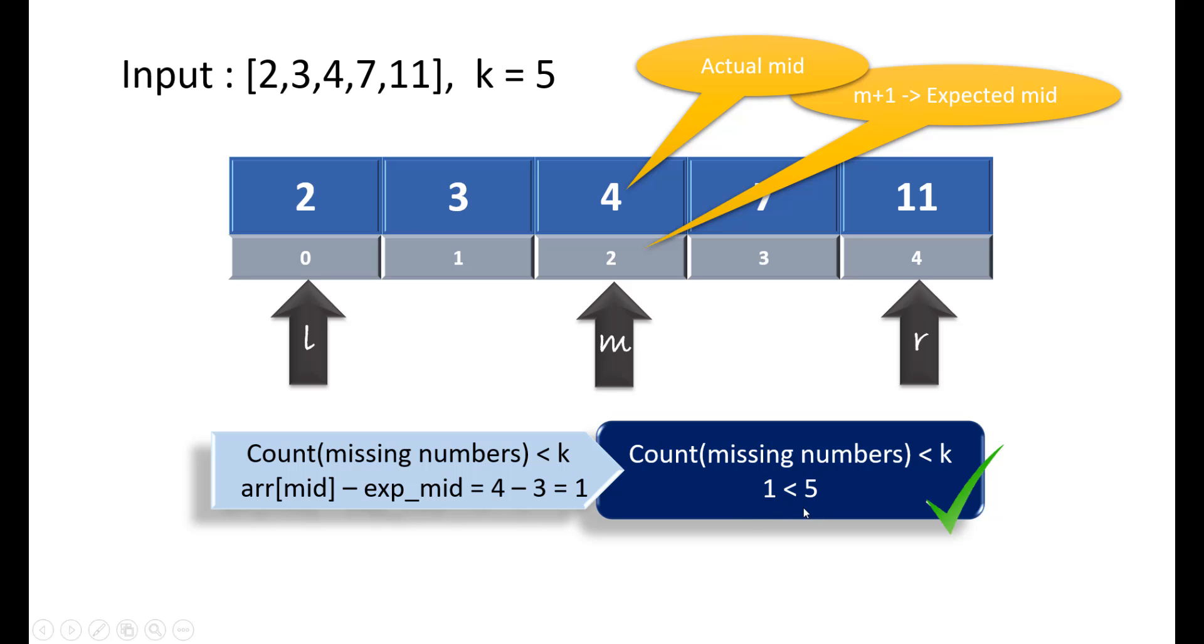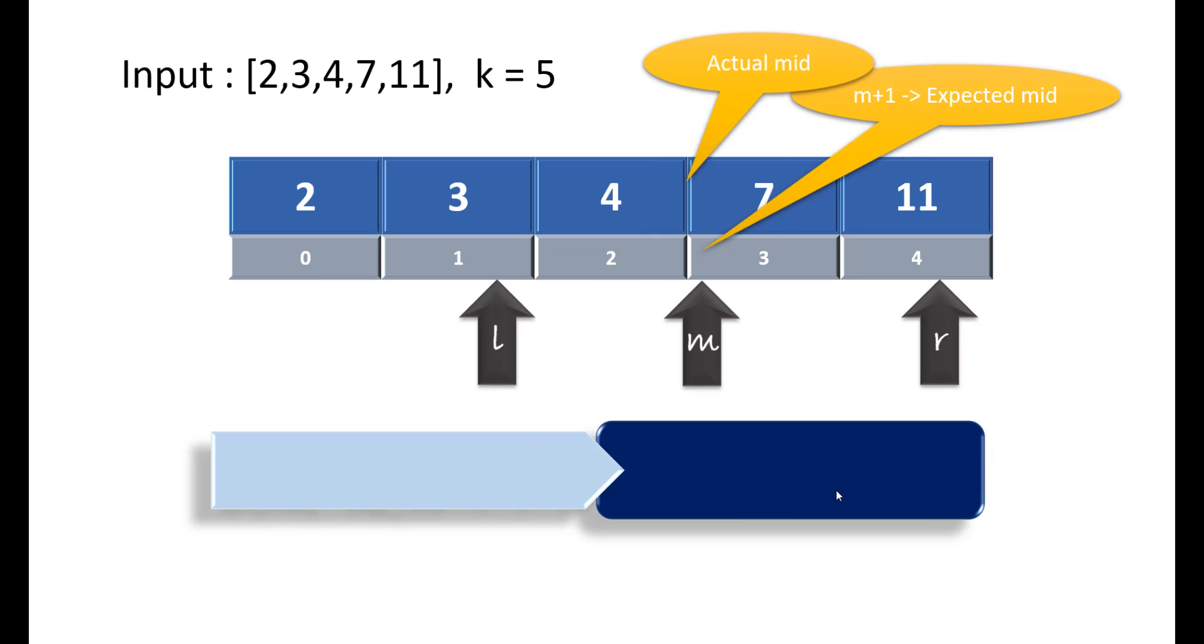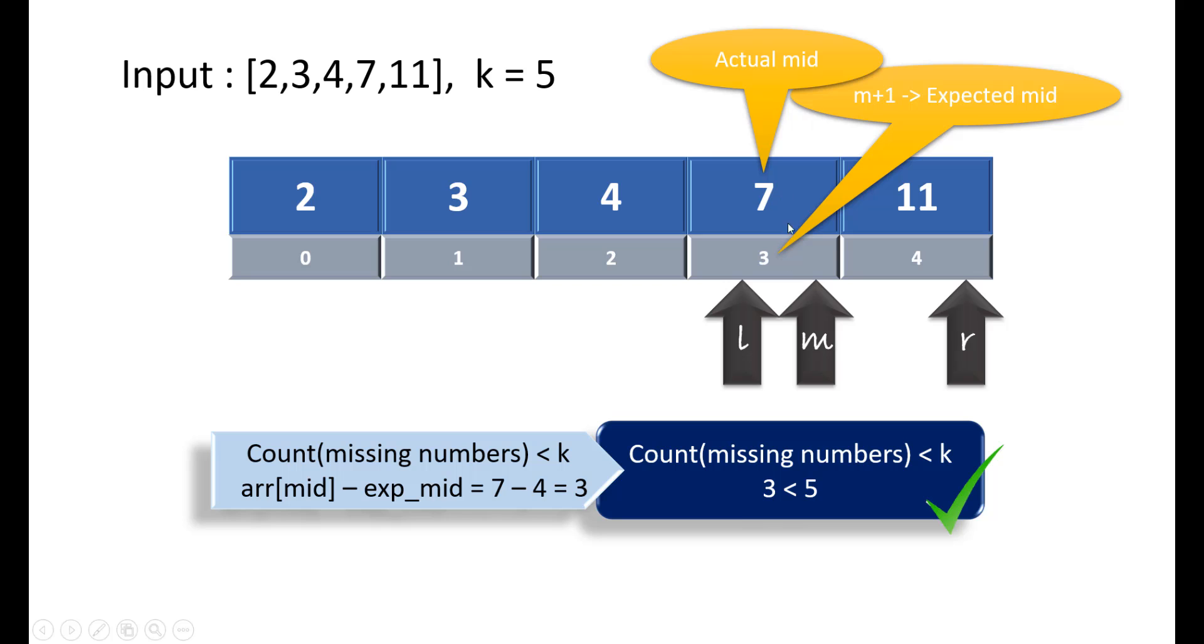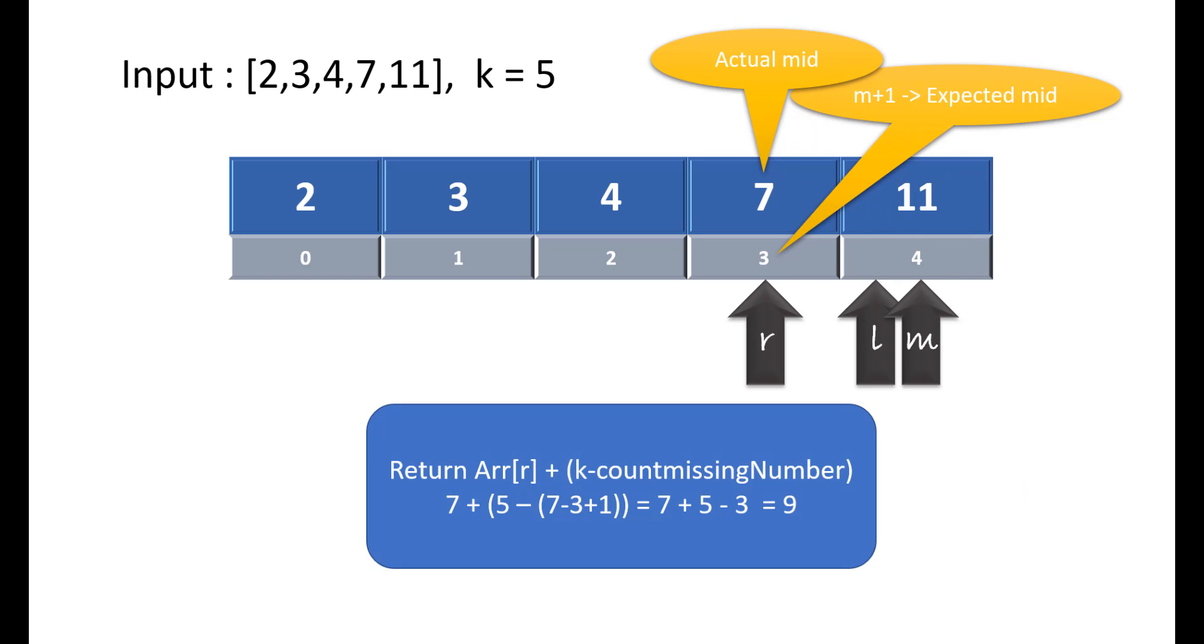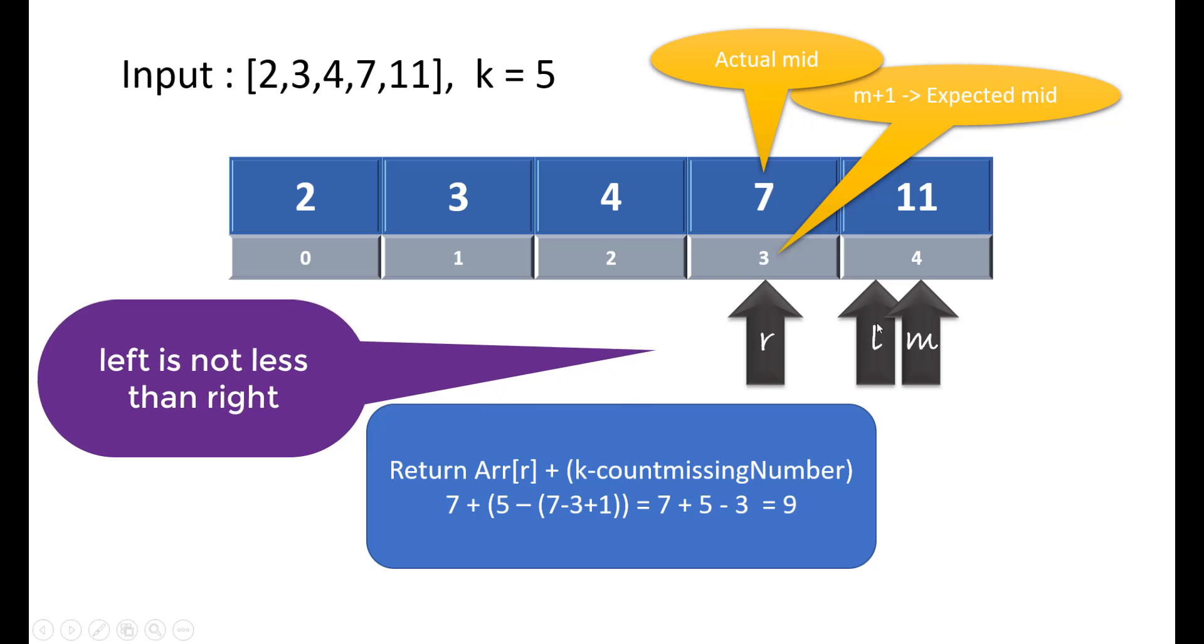Now when we compare where we need to search, we would definitely get that we need to search in the right part because we need the fifth number. So we move our left to mid plus 1, and then the mid becomes third index. Again when we see the formula, we know that three numbers are missing till this midpoint, so our answer lies in the right. So we again shift to right. Now here we see that there are six numbers that are missing, so we need to search in left. So we decrease right, and now right and left does not satisfy the condition of the binary search, that is left is less than right. Here right becomes less than left.